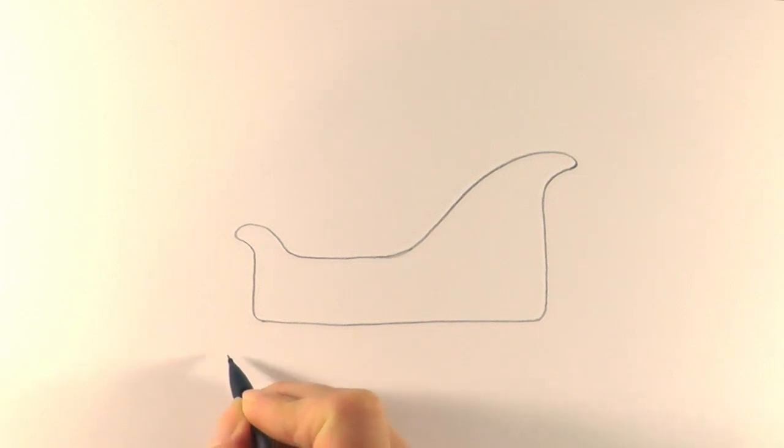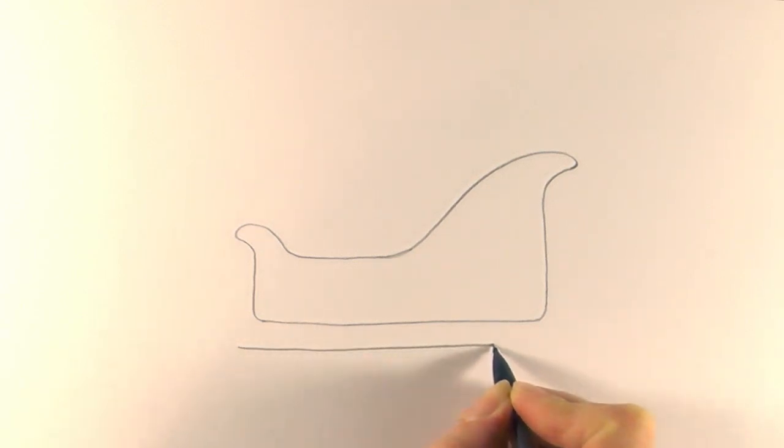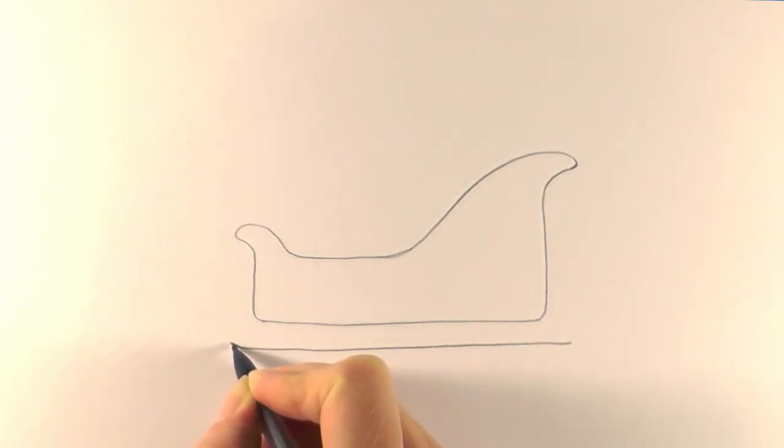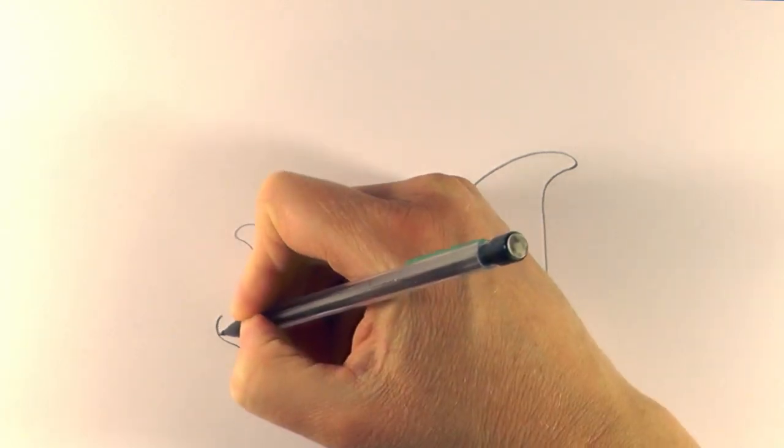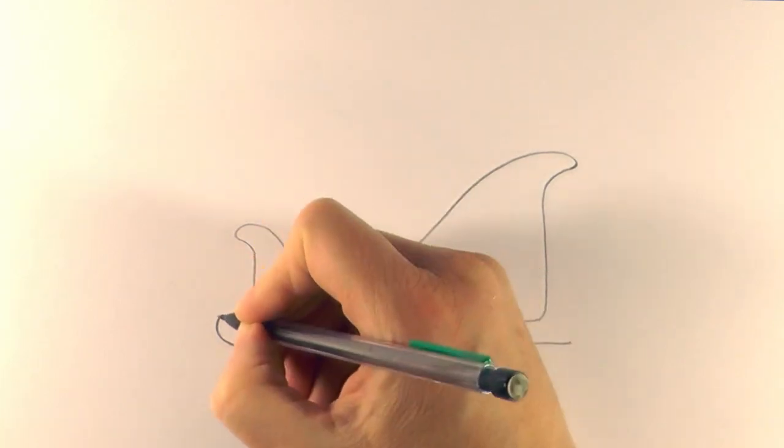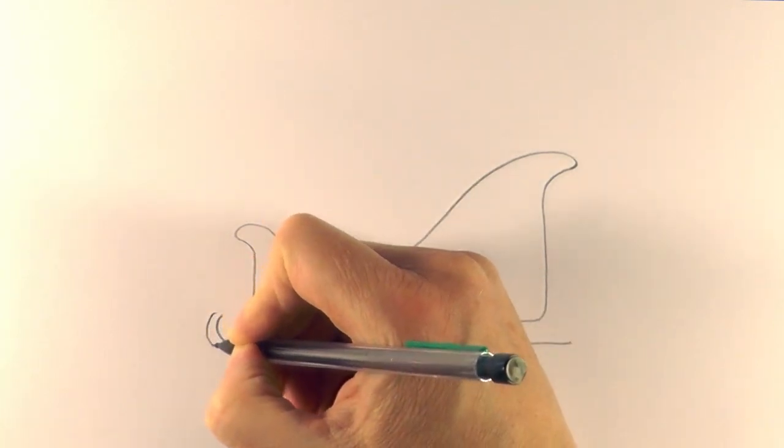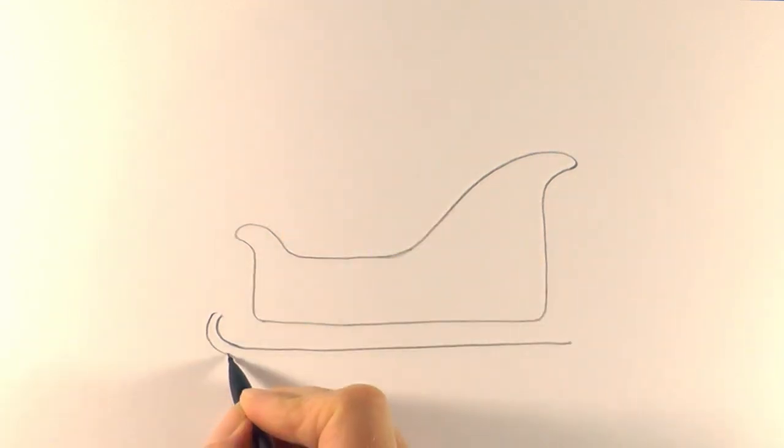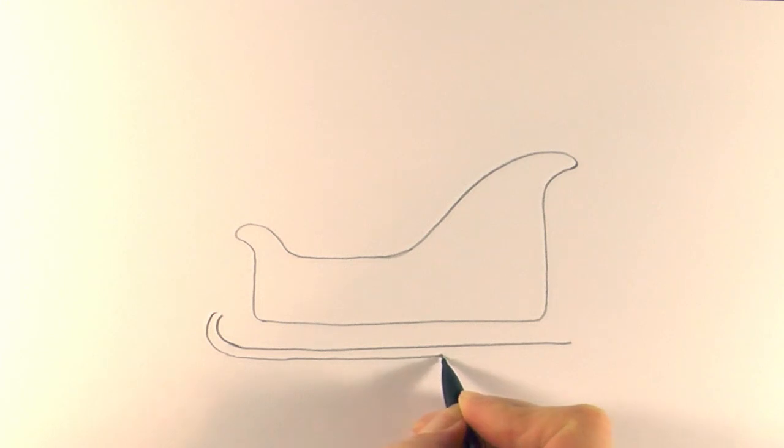And then we draw another line just along the bottom here like that, and then at the end curve it up like that and come down and around, and then just run that line along again just underneath that first one that we did like that.